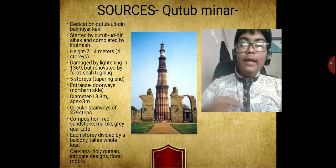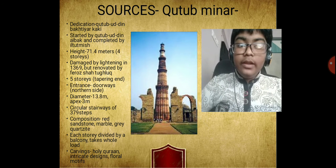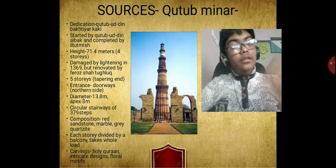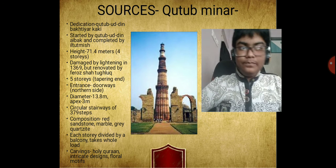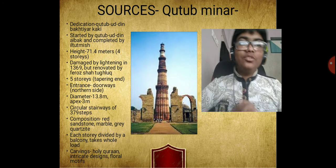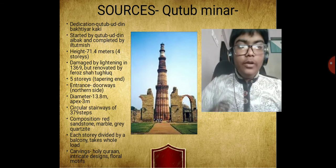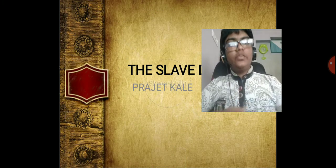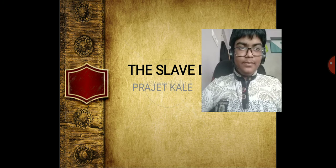It has carvings of the verses of the Holy Quran. It has intricate designs and floral motifs are also carved on it. In this way, we have learnt about the sources of the Delhi Sultanate. In the next module, I will be starting with the dynasties — the first four of them being the slave dynasties. Thank you.